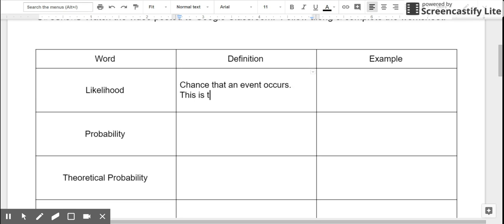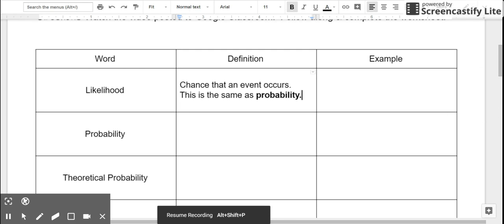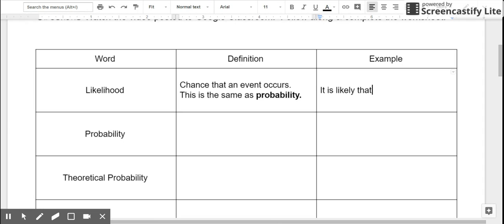This is the same thing as probability, which is our keyword for this unit. So let's think of an example for likelihood. We could say that it is likely that there will be rain tomorrow.